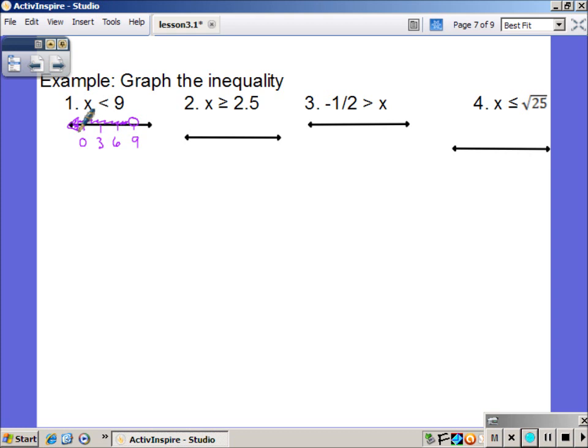x is greater than or equal to 2.5. So I'll go by 1's, which means halfway in between would be my 2.5. I do have an or equal to, which means I do have a closed dot greater than shading to the right.